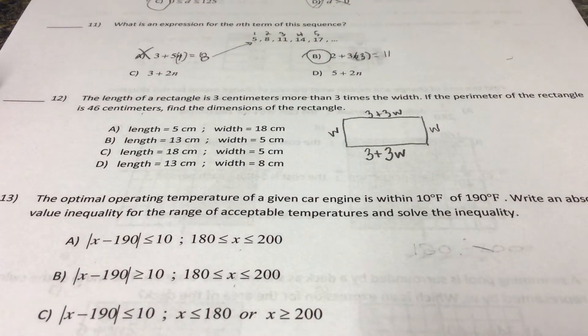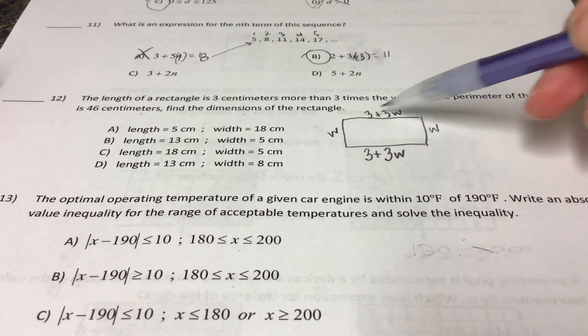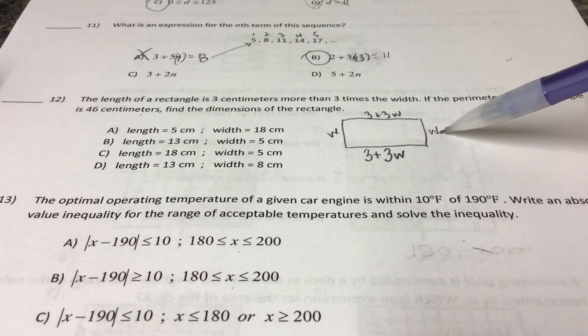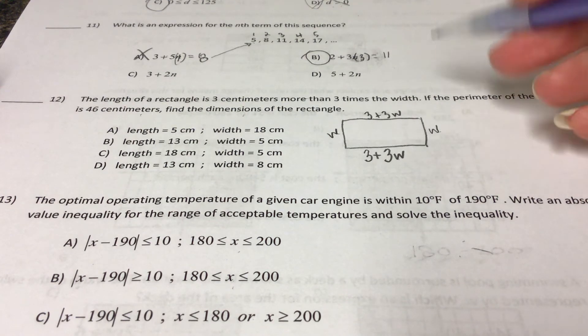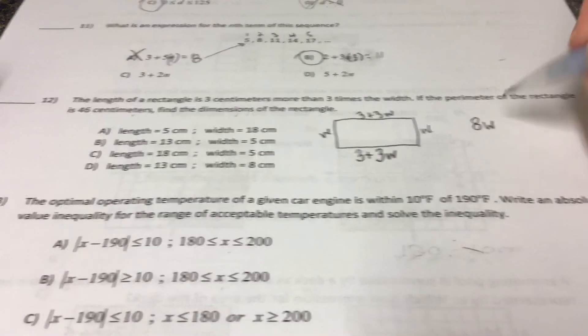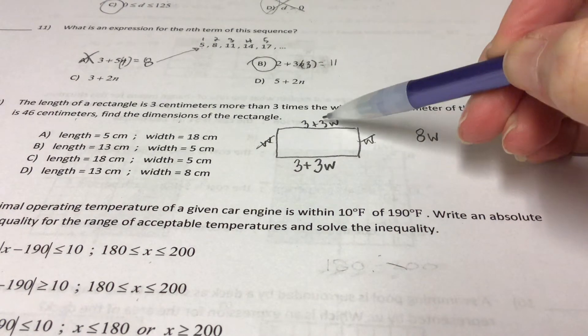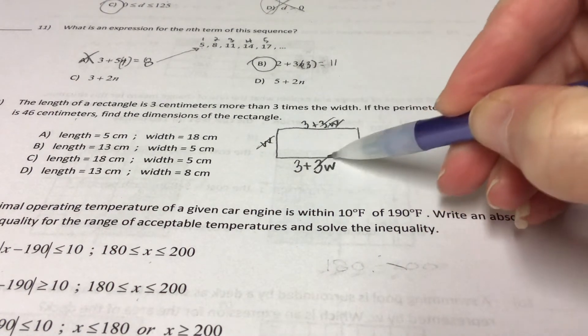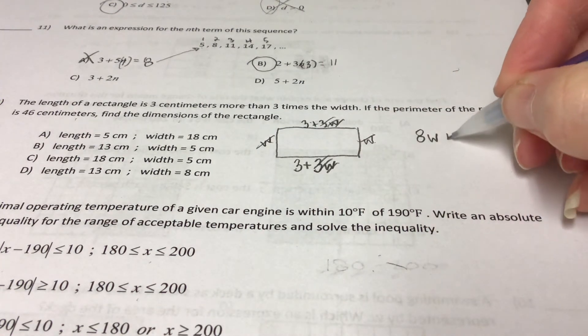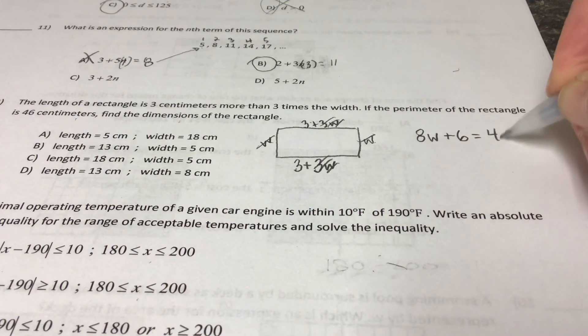So all of these added together should be equal to forty-six. So I'm going to shortcut this a little bit and kind of collect all my stuff now. W plus 3W plus W plus 3W is going to give me 8W's. Do you guys get that? One, two, three, four, five, six, seven, eight. Right? And then if I collect just the numbers, I got six. And that's going to be equal to forty-six.